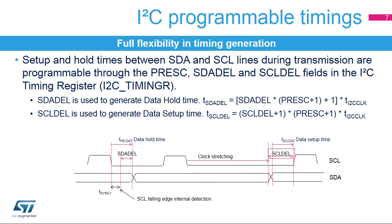The I2C setup and hold times can be configured by software through the I2C timing register. The SDA-DEL and SCL-DEL counters are used during transmission to guarantee the minimum data hold and data setup times. The I2C peripheral waits for the programmed data hold time after detecting a falling edge on the clock line before sending the data. After data is sent, the clock line is stretched low during the programmed data setup time. The total data hold time is greater than the programmed SDA-DEL counter.